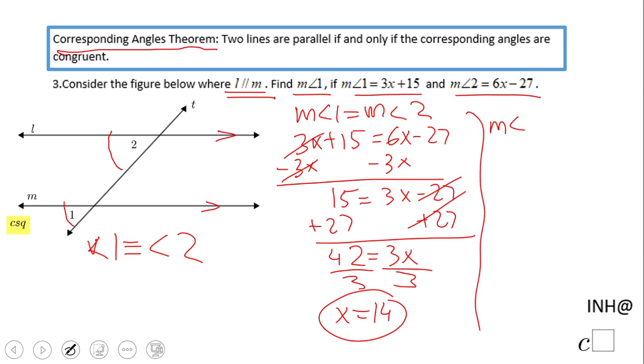That will be 3 times 14 plus 15, which is 42 plus 15.